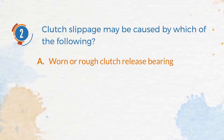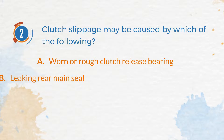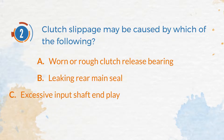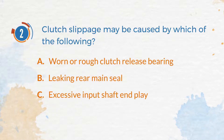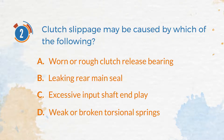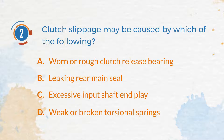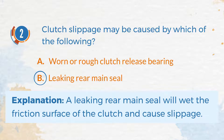A. Worn rough clutch release bearing. B. Leaking rear main seal. C. Excessive input shaft end play. D. Weak or broken torsional springs. The correct answer is B: Leaking Rear Main Seal. Explanation: A leaking rear main seal will wet the friction surface of the clutch and cause slippage.